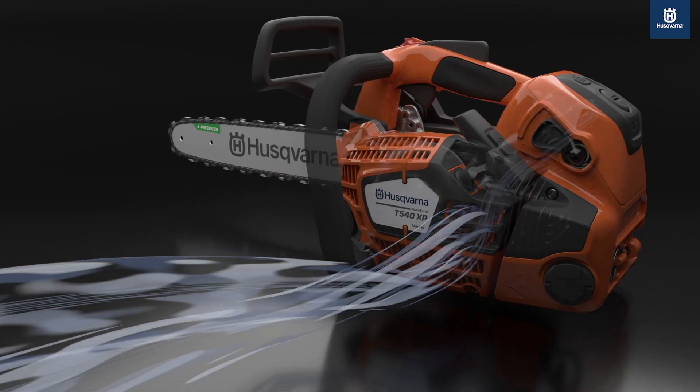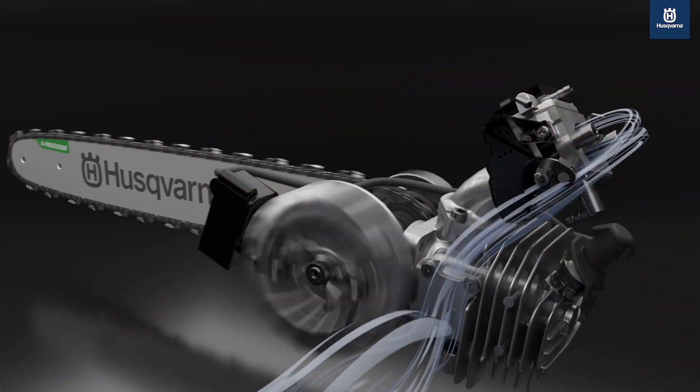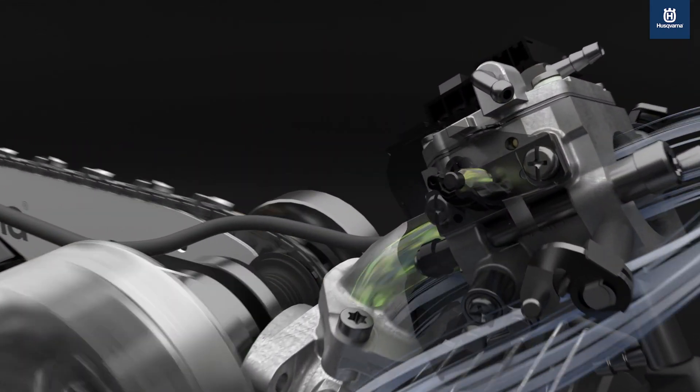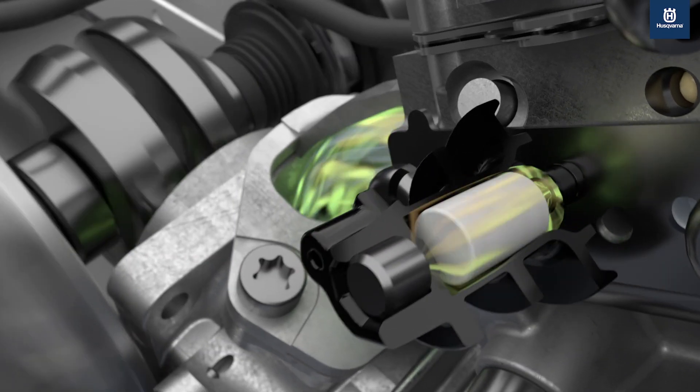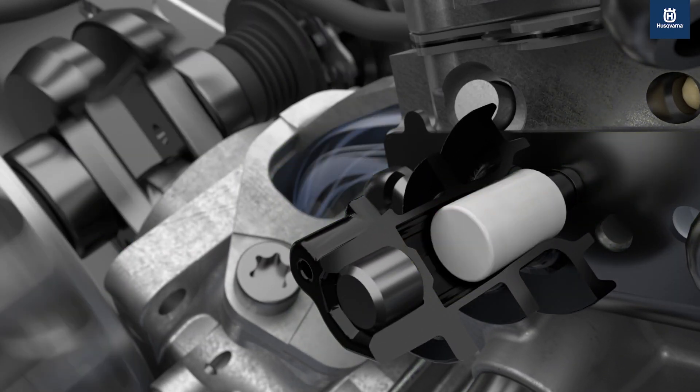All Husqvarna saws that come equipped with AutoTune have an electronic feature built into the carburetor that automatically tunes the air-fuel mixture to ensure the saw is always running at its peak performance.